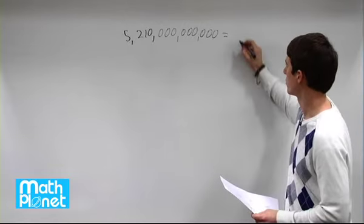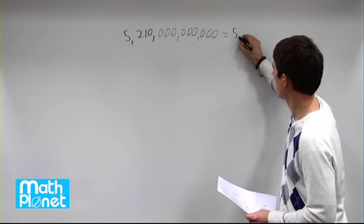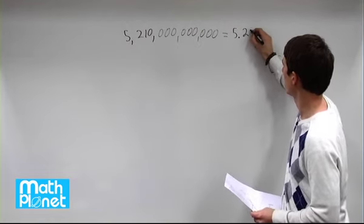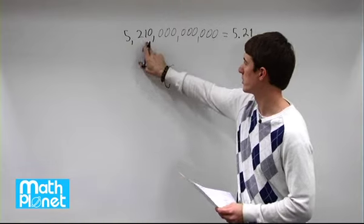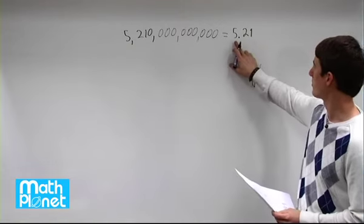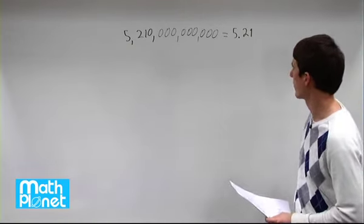How we write that is just one digit and then a decimal and then the remaining significant digits, so 5.21. So 5, but this isn't 5 trillion anymore, it's 5.21.